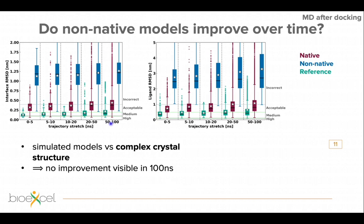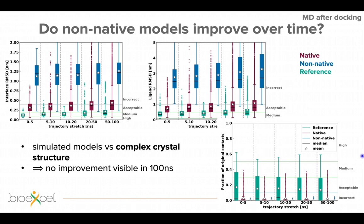In these graphs, you can see trajectory stretches from 0 to 5, 5 to 10 nanoseconds, etc., with box plots over all 20 complexes. We see interface RMSD and ligand RMSD. The reference simulations in green remain the lowest — most similar to the original crystal structure — which makes sense since they come from the crystal structure. The acceptable models are close enough. However, the non-native ones were already high from the beginning and don't seem to come closer. For both native and non-native, we don't see significant improvement over 100 nanoseconds.